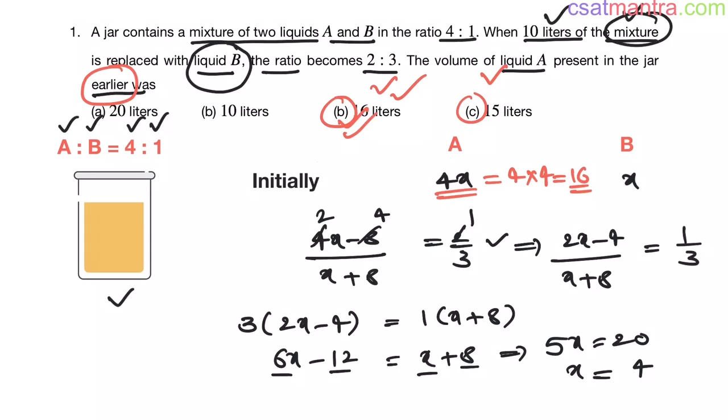Just by looking at the options, you can eliminate 2 options, because A should be multiple of 4. Volume of liquid A should be multiple of 4. 10 is not multiple of 4. 15 is not multiple of 4. So, these 2 options are eliminated. Our answer can be either A or B. You can solve what is the volume of liquid in this method. Here, remember one thing, you take any liters of that mixture, the ratio of liquid A and B is going to be same in that mixture.